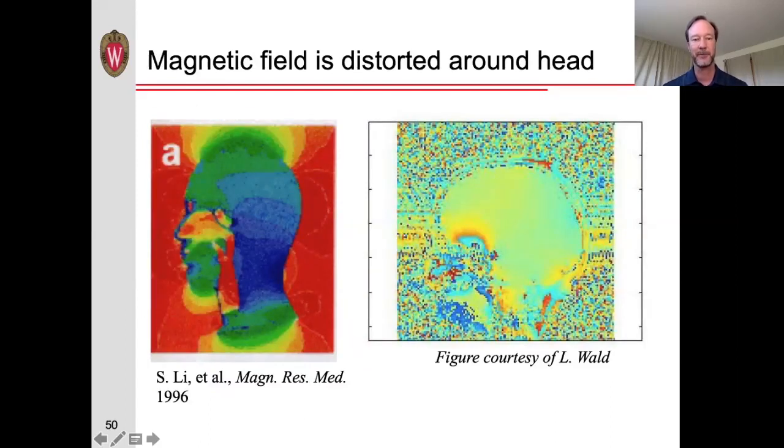Another distortion comes from non-uniformities in the magnetic field. So if we place the head in a magnetic field, the magnetic field is going to become distorted somewhat. On the left is a simulation for what the magnetic field distortions would look like, with the main magnetic field going in the superior-inferior direction. On the right is an actual image of a field map taken from Larry Wald at Massachusetts General Hospital. You notice the non-uniformity particularly here in the frontal lobe, and that results from this air-tissue interface in the sinuses. Because of this difference in magnetic susceptibility between the air in the sinuses and the tissue in the brain, that causes magnetic field non-uniformities that propagate even further into the brain.